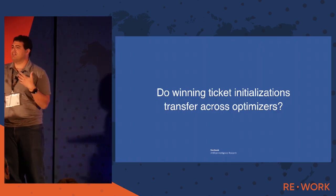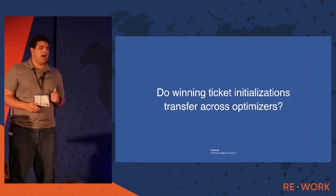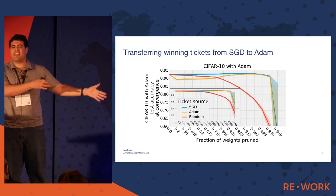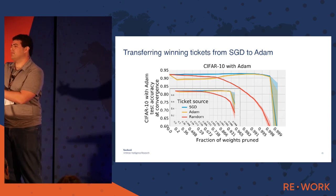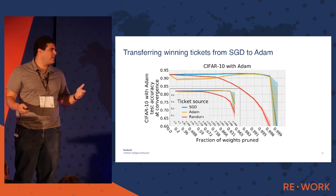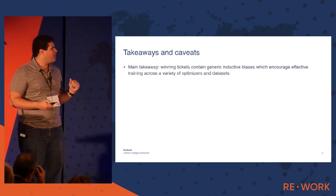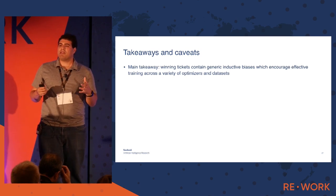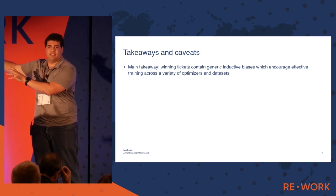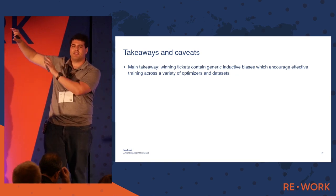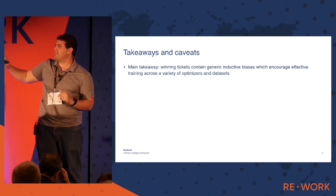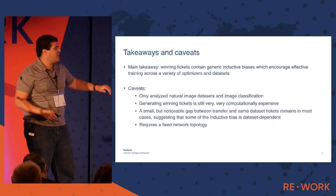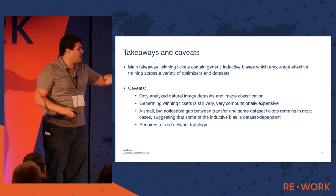Another question is what happens if you use different optimizers — different ways of learning. We can generate a winning ticket using one optimizer, standard SGD with momentum, and then evaluate using a different optimizer like Adam, and find that it works really well — and we can also go the other way. Main takeaways from this part: winning tickets do contain generic inductive biases. This is encouraging because it means we can find a winning ticket once on a large dataset, and then apply it to any new similar problem without repeating the expensive train-prune cycle.